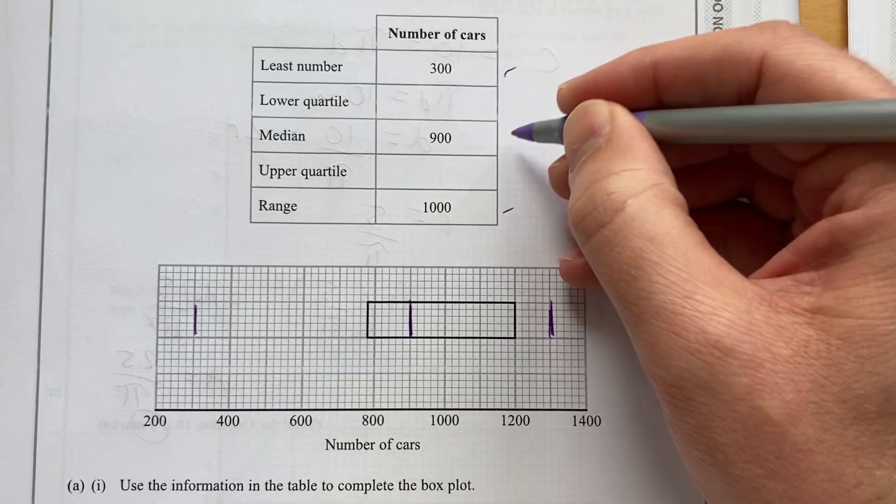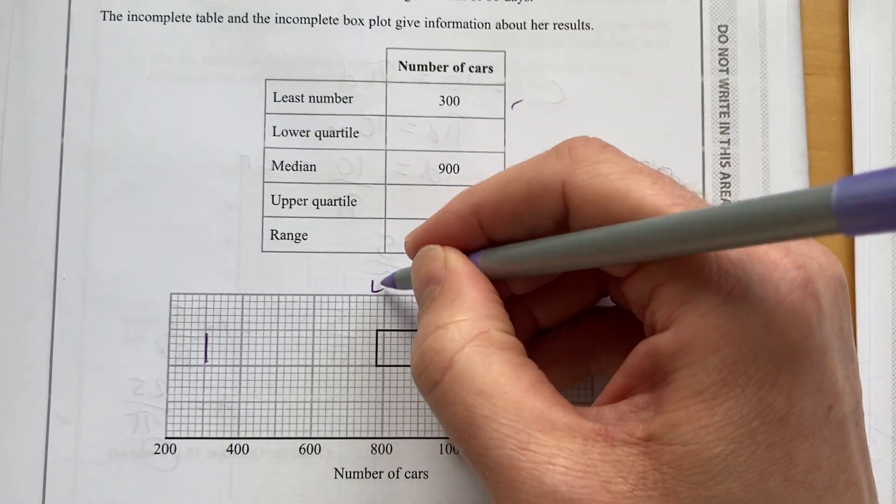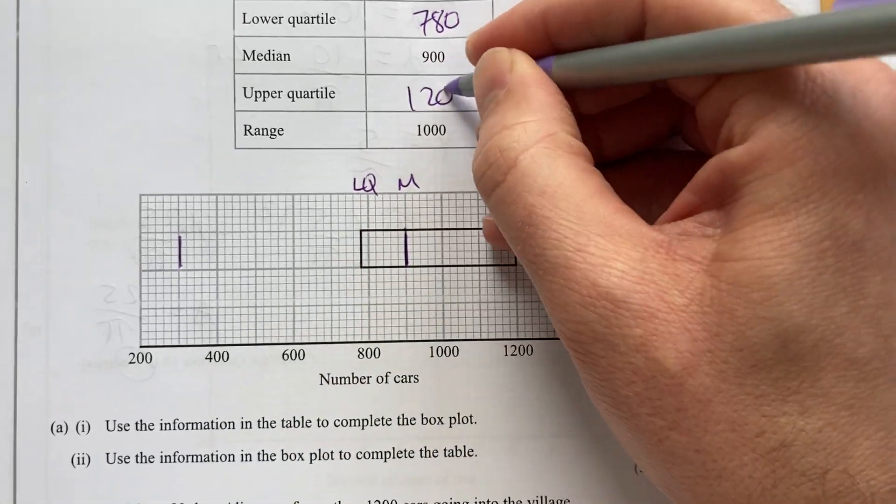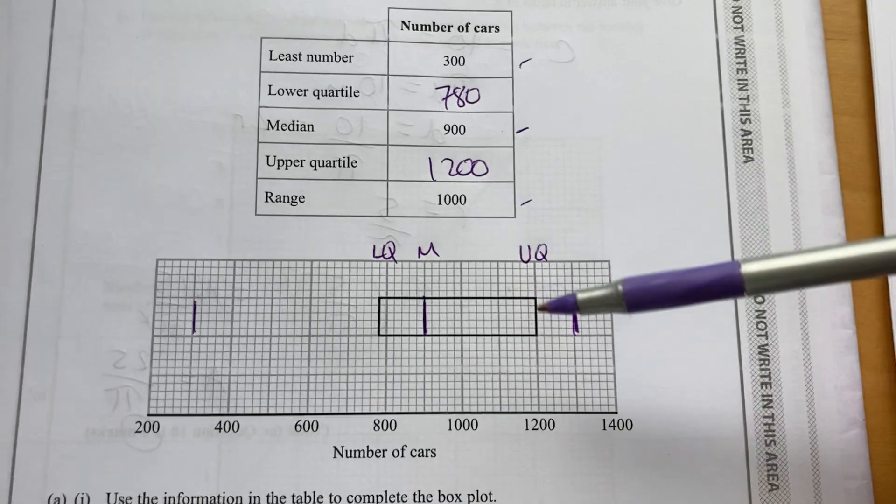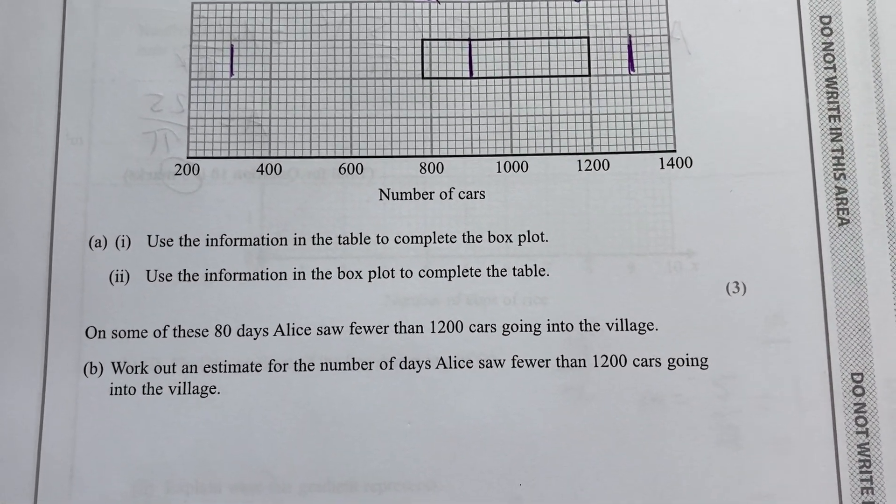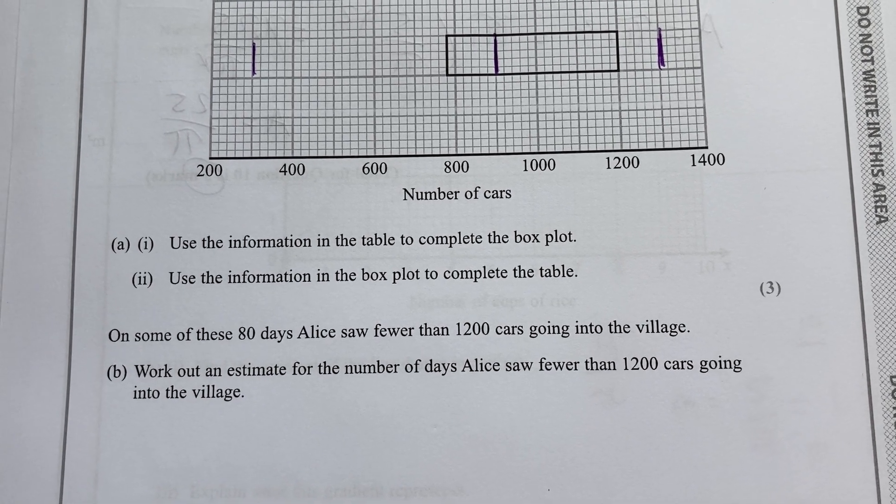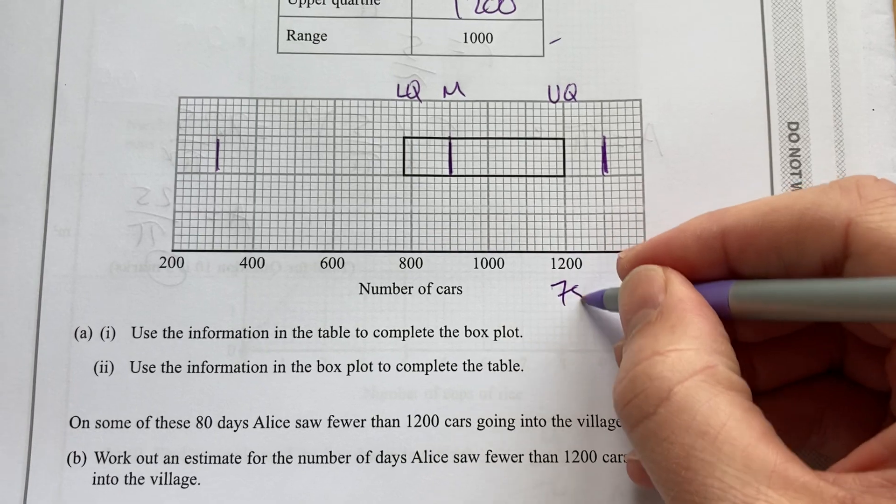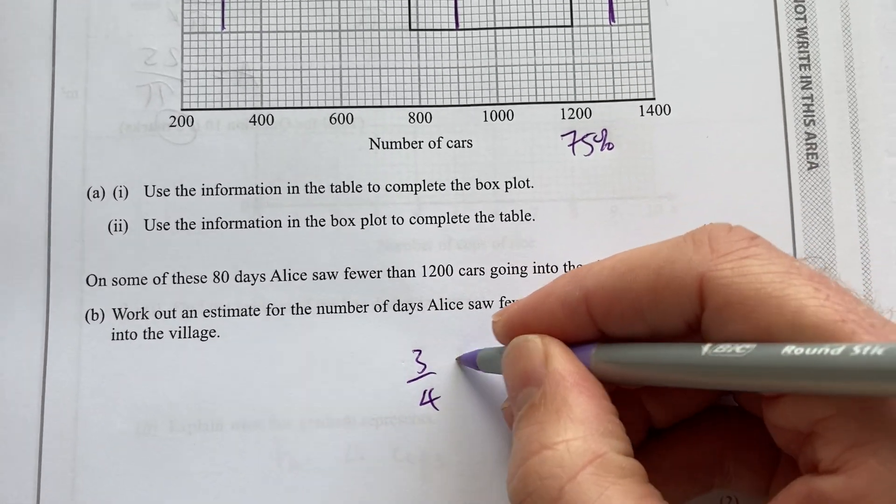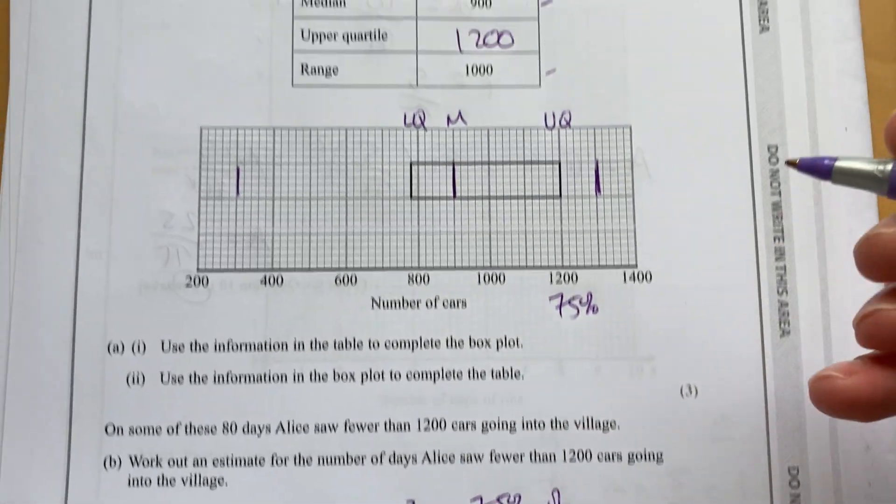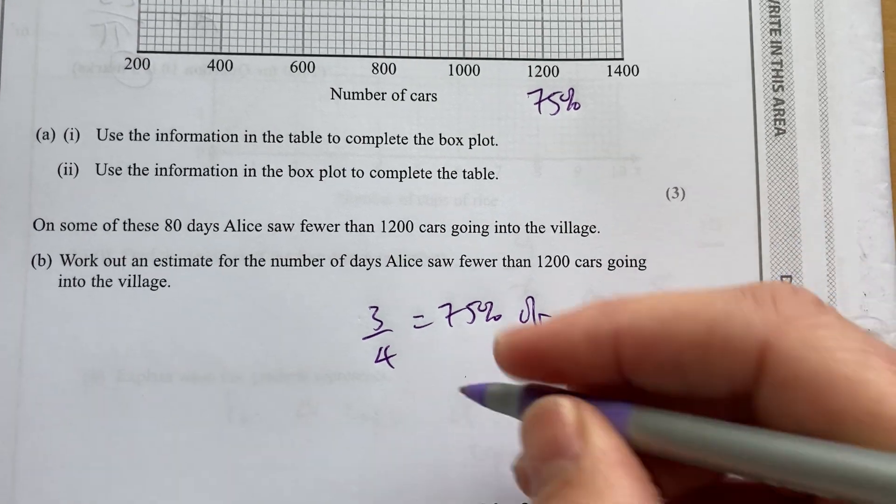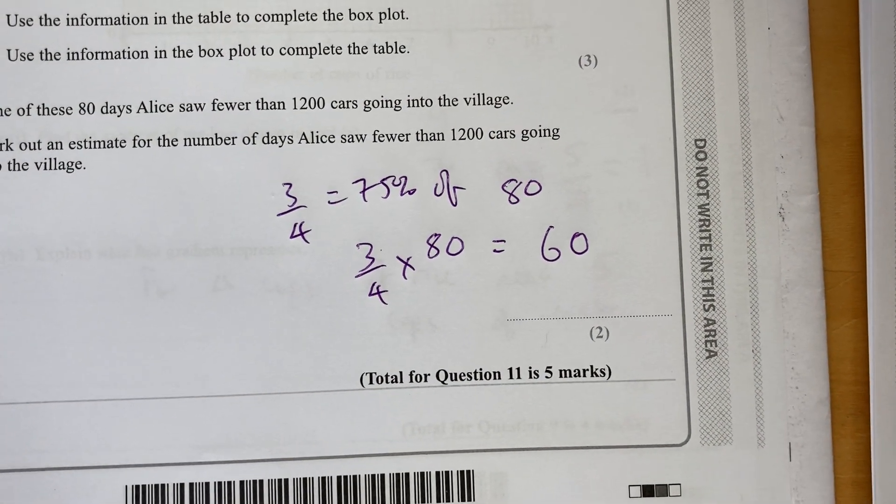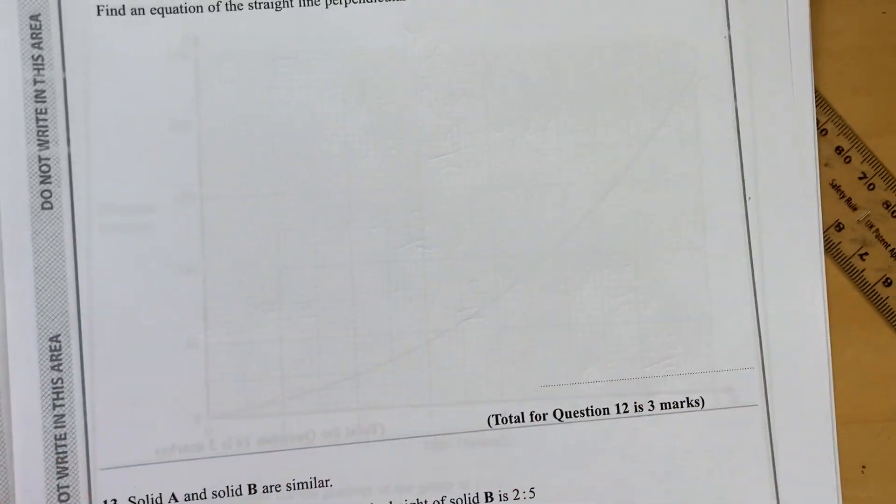And the median is 900. That'll be there. The lower quartile, we know, is there. So, that is 780. Upper quartile is there, is 1,200. So, I've filled in information from there onto there and vice versa. On some of those days, Alice saw fewer than 1,200 cars going to the village. We'll get an estimate for the number of days Alice saw fewer than 1,200. So, we have 1,200 being the upper quartile. That's 75%. So, I want 3 quarters or 75% of 80 days. So, 3 quarters times 80 is 60. So, I would say 60 days.